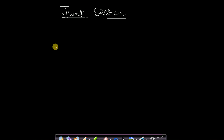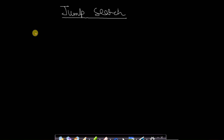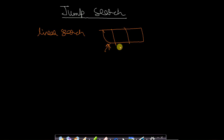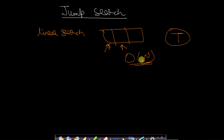Welcome back to Tech Dose. In this video we will see what is jump search and how to apply jump search in order to search for an element present in an array. Our objective is to do a lower number of searches than linear search. The most simple searching algorithm is linear search, where we pass through all elements and compare with the target, but the problem is it takes O(n) time. We want to reduce time from O(n) to something less.